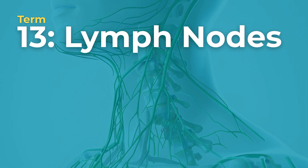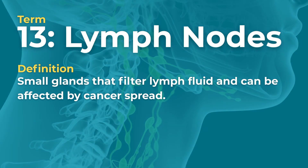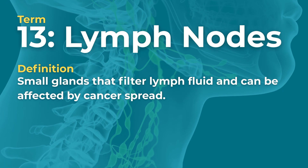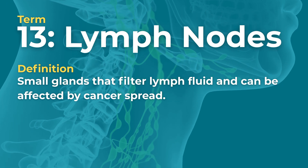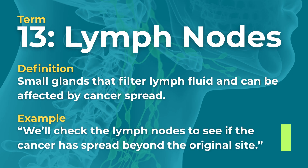Term number thirteen is lymph nodes. Lymph nodes are small glands that filter lymph fluid and can be affected by cancer spread. Example: 'We'll check the lymph nodes to see if the cancer has spread beyond the original site.'